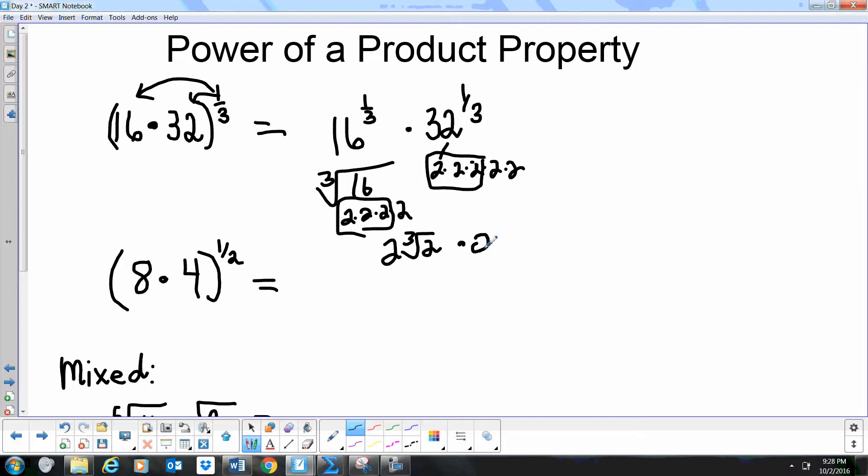Now we have 2 times 2 on the outside, so we're going to multiply the outside together and that's going to give us 4. And then we're going to have cube root of - we'll multiply the inside together - 2 times 4 is 8.